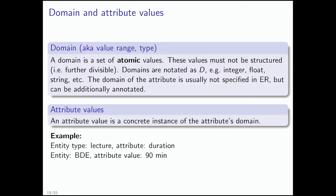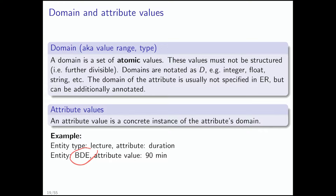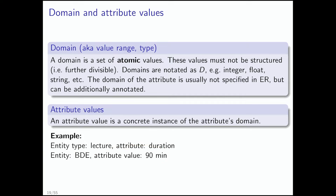An attribute value is a concrete instance of an attribute's domain. For example, the entity type is 'lectures,' the attribute is 'duration,' the concrete entity is 'Big Data Engineering,' and the attribute value is 90 minutes. Some lectures may be 180 minutes or more, but 90 minutes is the attribute value for this specific lecture entity.